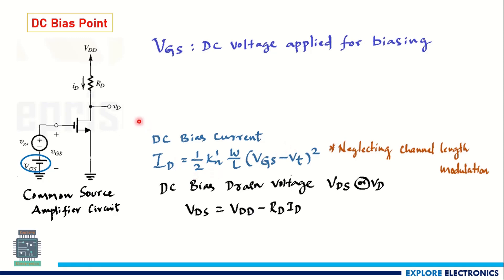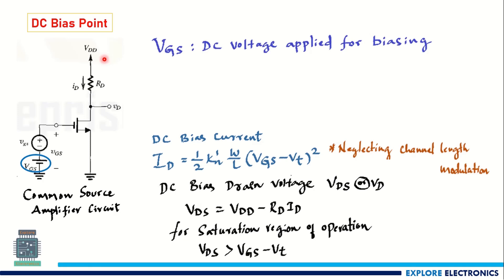The DC voltage at the drain to source is VDS = VDD − ID·RD, where ID is the DC bias current, VDS is the drain-to-source DC voltage, and VDD is the supply voltage. The condition for the saturation region is that this DC voltage VDS must be greater than VGS − VT, where VGS is the DC gate-to-source voltage.